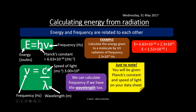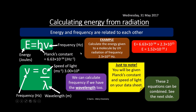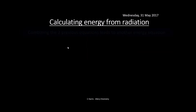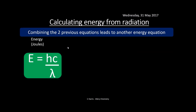Frequency can also be calculated from the speed of light using f = c/λ, where c is the speed of light (3 × 10⁸ m/s) and wavelength λ is in meters. All radiation in a vacuum travels at 3 × 10⁸ m/s. You'll always be given Planck's constant and the speed of light in your data sheet. These two equations can be combined to give E = hc/λ.